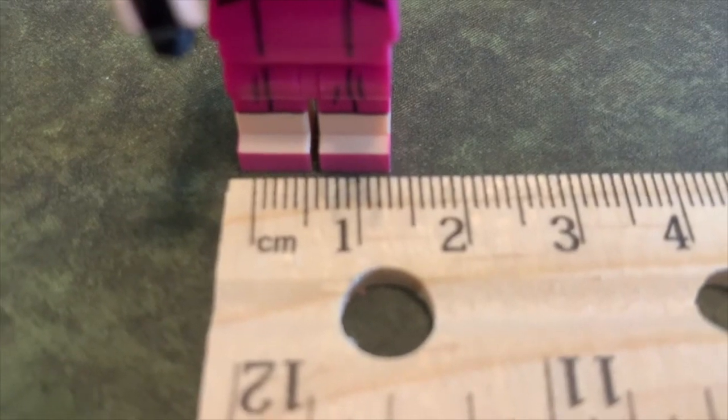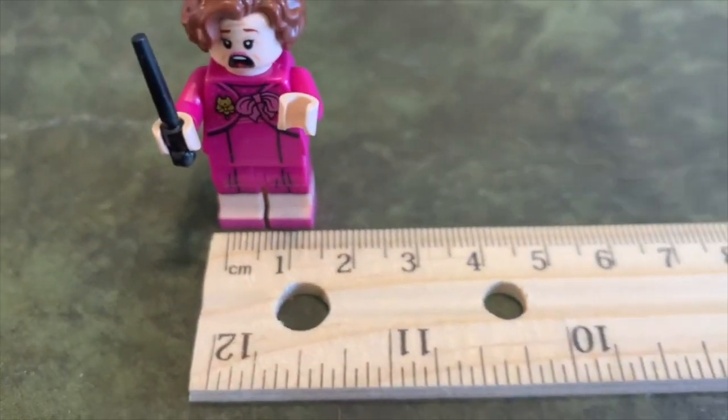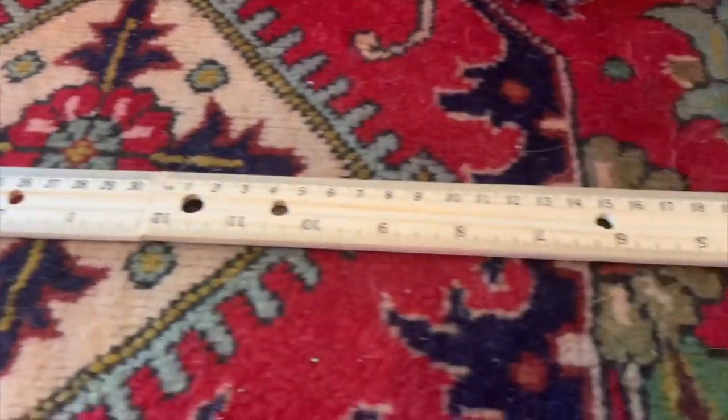10 millimeters equals 1 centimeter. 100 centimeters equals 1 meter. 1,000 meters equals 1 kilometer.